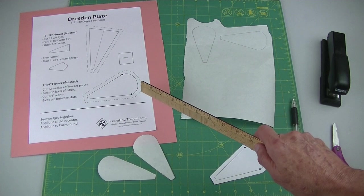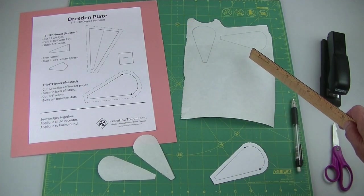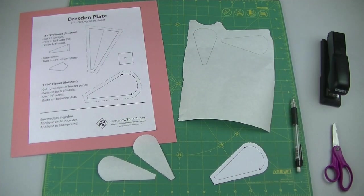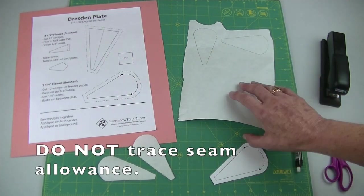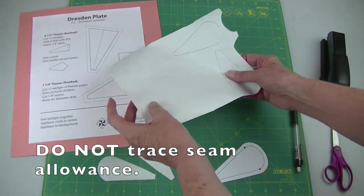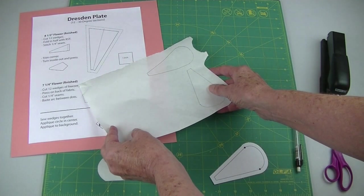To make these rounded petals I'll also be using freezer paper. For this method you do not need to trace the seam allowance. You can do that by just placing the paper over the handout.